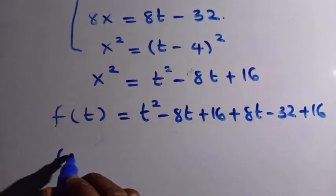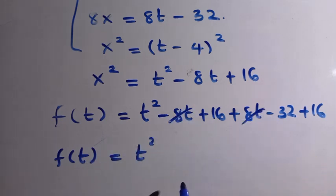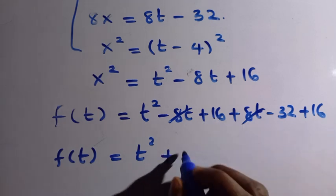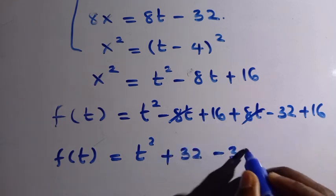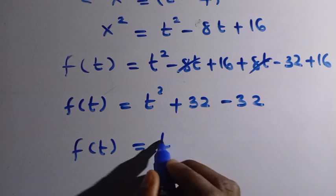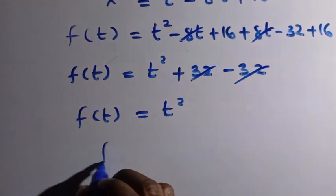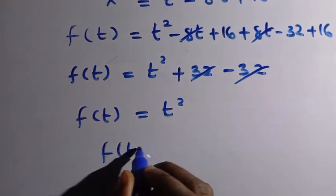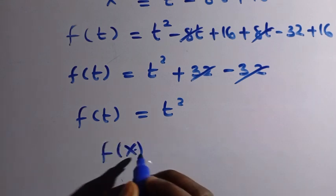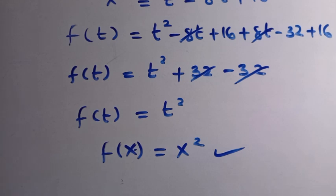Simplifying: f of t equals t squared, since minus 8t and plus 8t cancel, and 16 minus 32 plus 16 equals 0. Since x and t are members of the real numbers, we can write f of x equals x squared. We get the same result with both substitution and form manipulation. Thanks for watching and see you in the next class, bye bye.